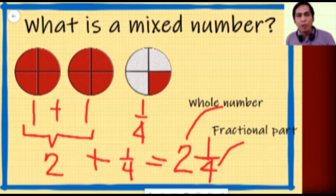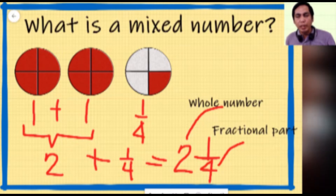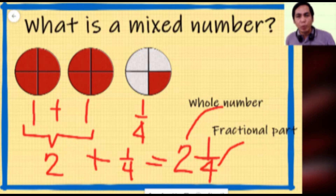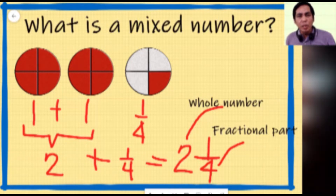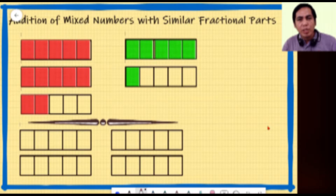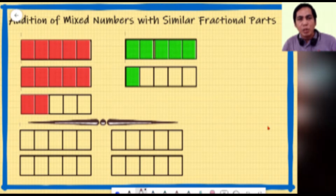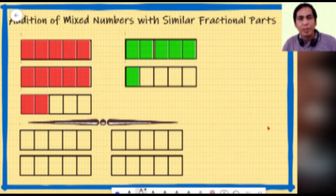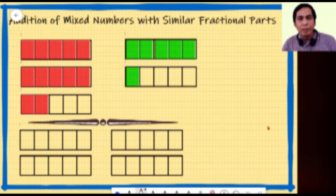In our example we added two and one fourth, so the result is the mixed number two and one fourth. Now what if we are adding two mixed numbers? Let us start by adding two mixed numbers whose fractional parts are similar — meaning the denominators of the two fractions are the same. We will use rectangular tiles to help us visualize.